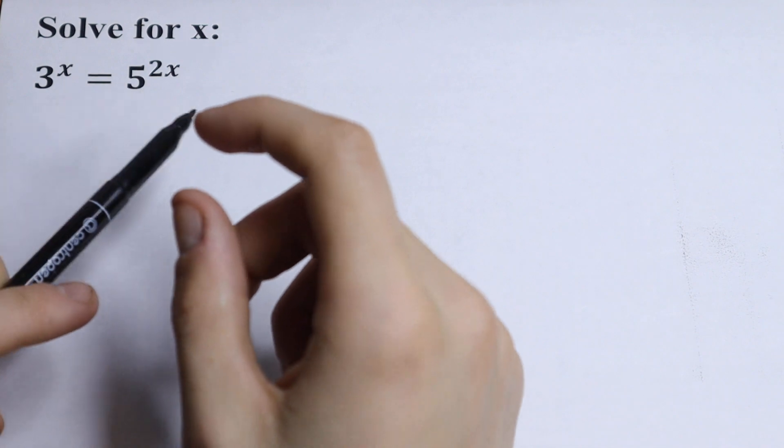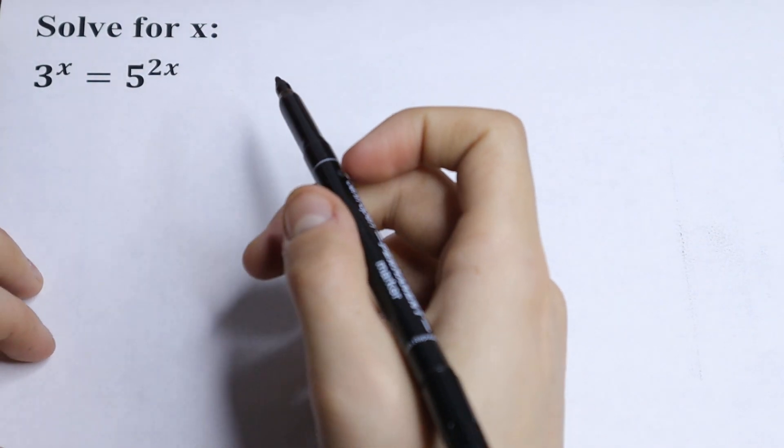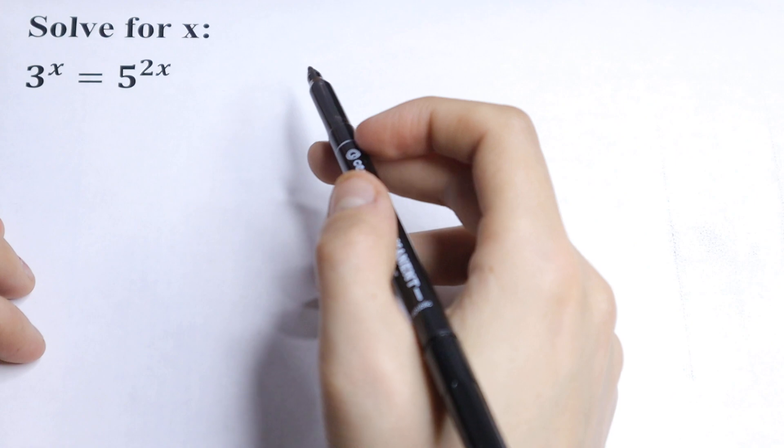Here we have an interesting exponential equation: 3 to the power x equals 5 to the power 2x. So let's try to solve this. Let's try to simplify this.